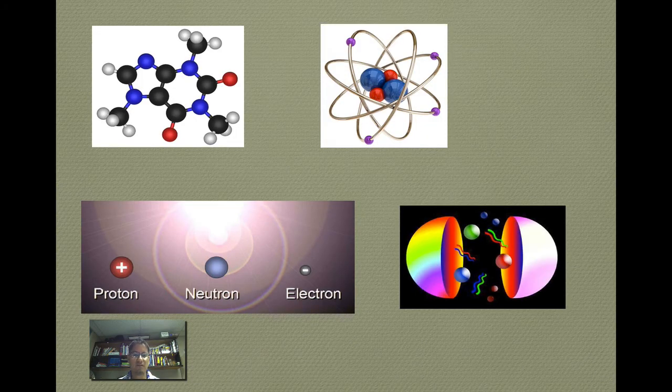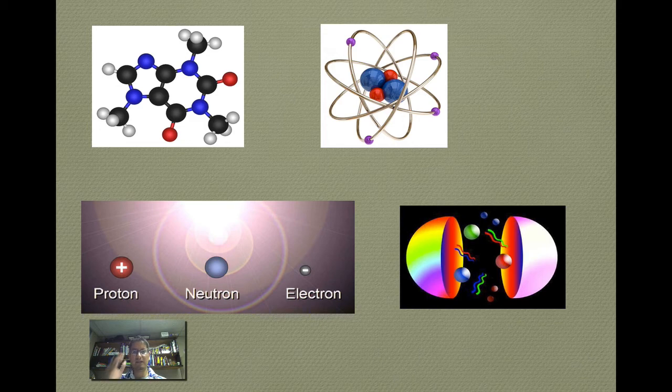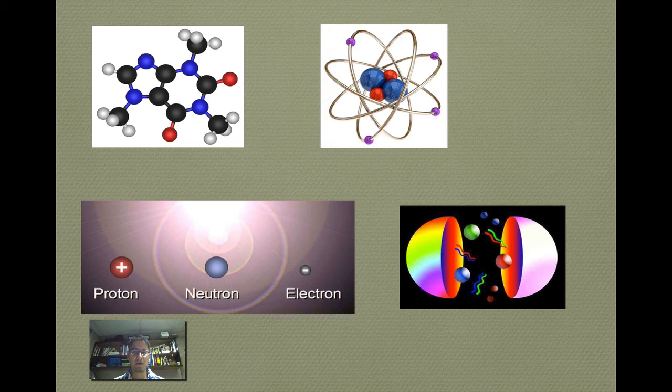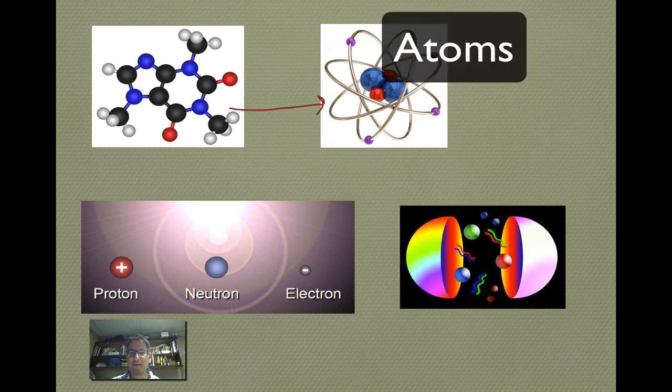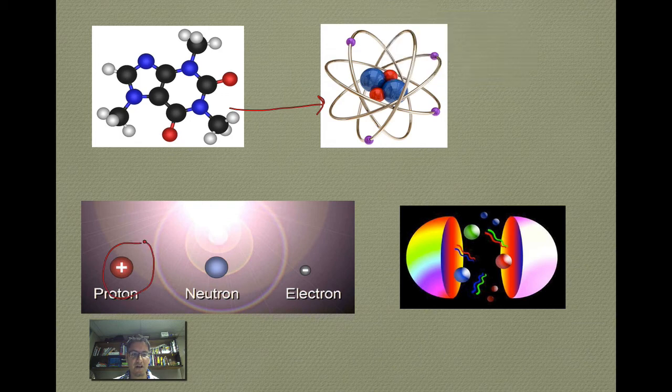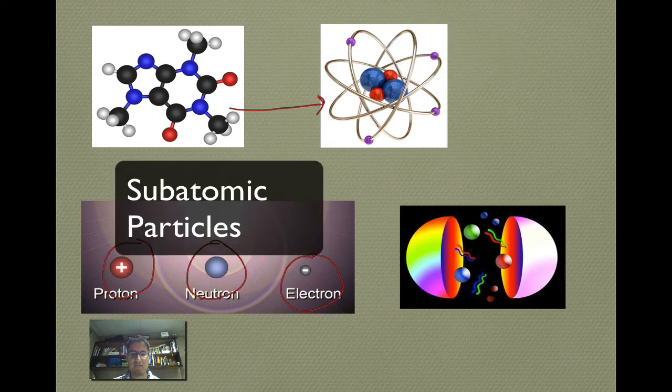Democritus and John Dalton agreed that if you divide matter continually, you get to a point where you can't split it any longer. And modern physics has actually shown us that that's actually not correct. Because as you know already, you can go from a molecule, break it down to its individual atoms, and then break down an individual atom to its component parts, which are made out of protons, neutrons, and electrons.